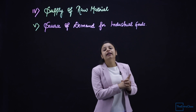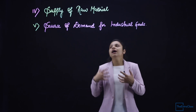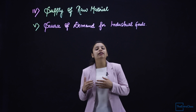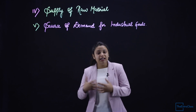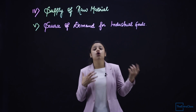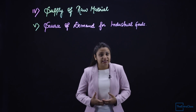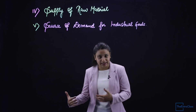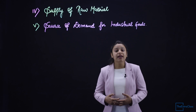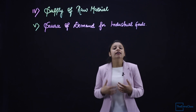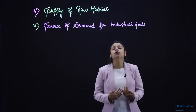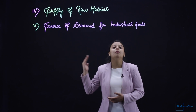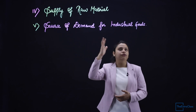Agriculture is also a source of demand for industrial goods. Although agriculture is the backbone of the industrial sector, the demand generated by agriculture also fulfills the needs of the industrial sector. For example, previously cattle were used for plowing fields, but now tractors are used. Therefore, the industrial sector produces tractors and harvesting machines because there is demand for them from the agriculture sector.